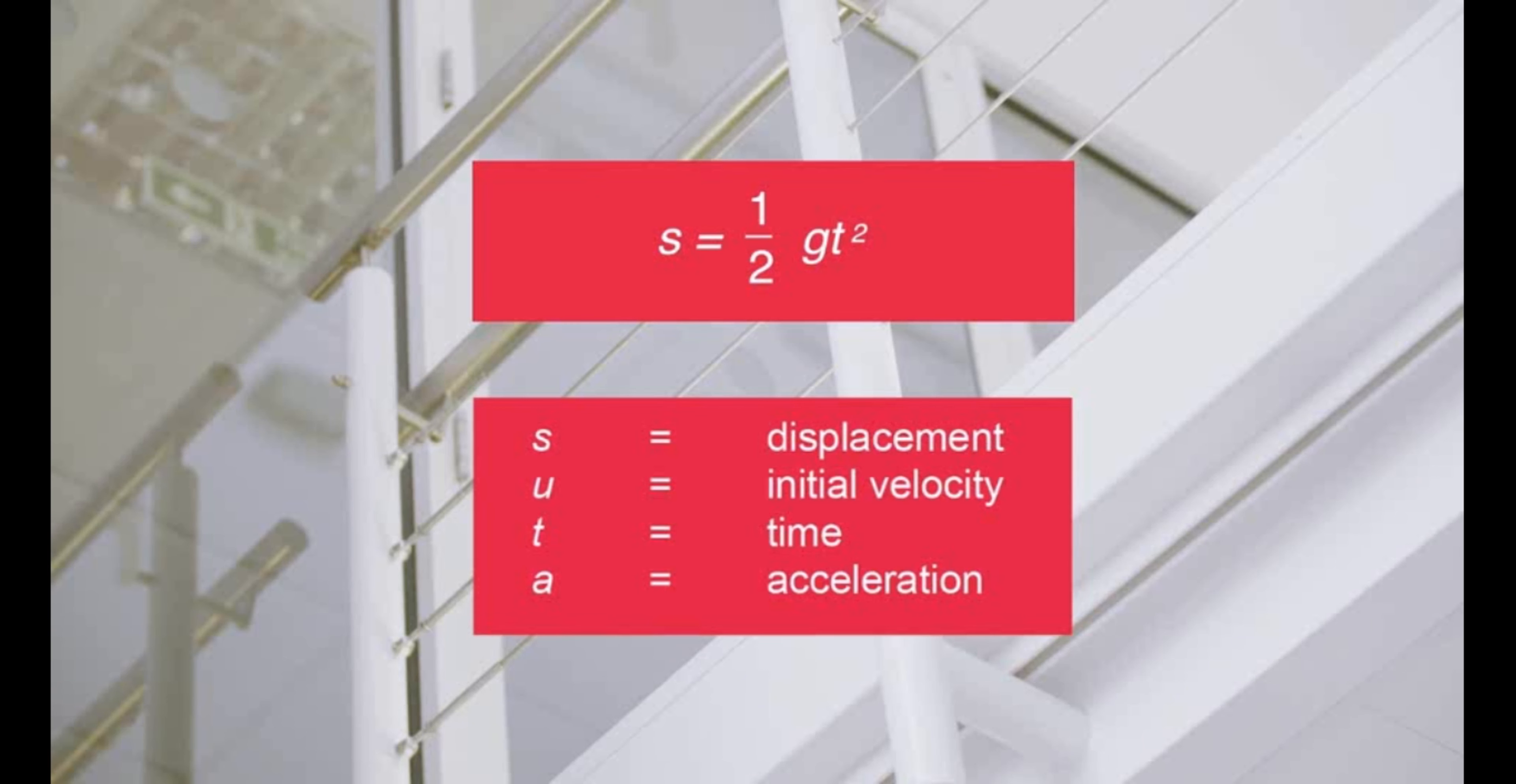In a graph of s against t squared, the gradient is therefore equal to a half g. A graph is plotted of s against t squared. A line of best fit is drawn. The gradient of the line of best fit represents a half g.